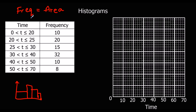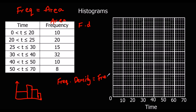So the frequency - how many people there are - is the area of the bar, not the height of the bar. The height is called frequency density, and that's frequency divided by class width. So frequency density is frequency divided by class width.